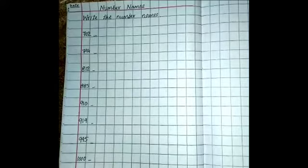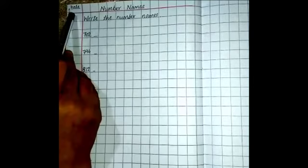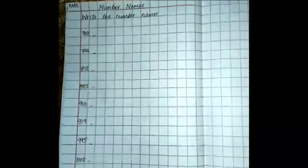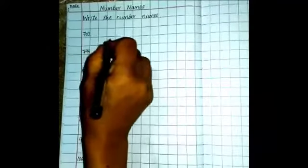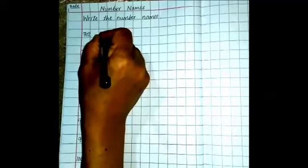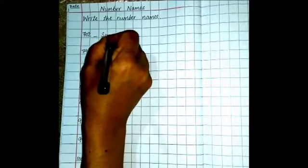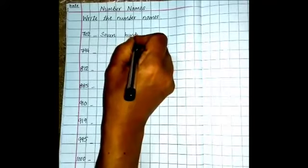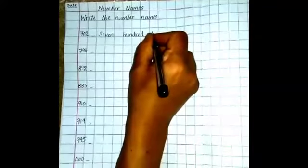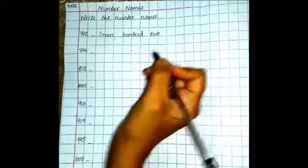Now children, we are writing number names. Write today's date here and draw the margin. Okay, what is this number? 702. So write here first 7, S-E-V-E-N-7, H-U-N-D-R-E-D-100, 2, T-W-O-2.